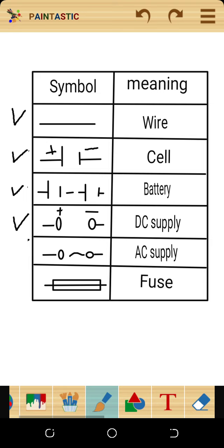The fourth symbol represents DC supply. DC stands for direct current, and in a DC supply, current flows in one direction.